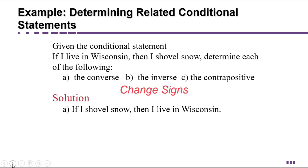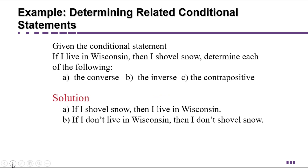The inverse, part B, means that we're going to keep the order the same, but we're going to negate each component statement. So that would be if I don't live in Wisconsin, then I don't shovel snow. See how Wisconsin is still in the antecedent part of the statement, the if part,